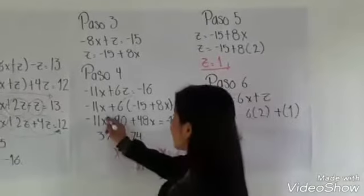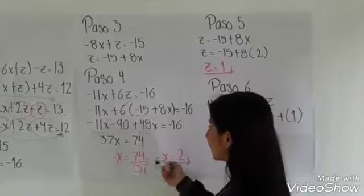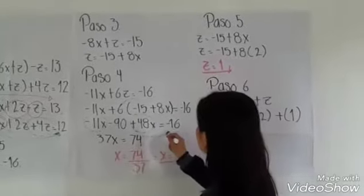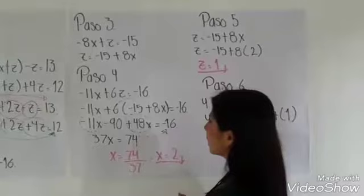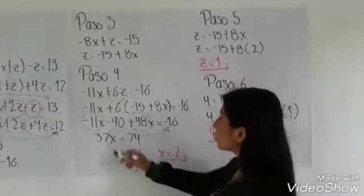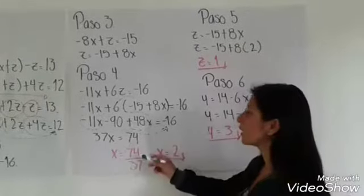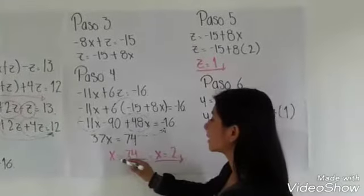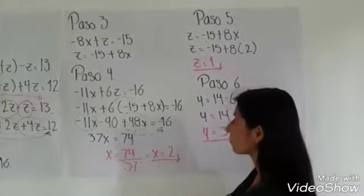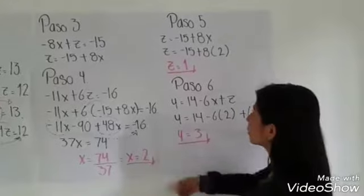Vamos a sumar los términos con la misma incógnita, es decir las X, y el número independiente se va a pasar al extremo del signo igual. Nos queda 37X es igual a 74. Y vamos a despejar X, que X es igual a 74 entre 37. Y aquí tenemos el primer valor, que es X igual a 2.